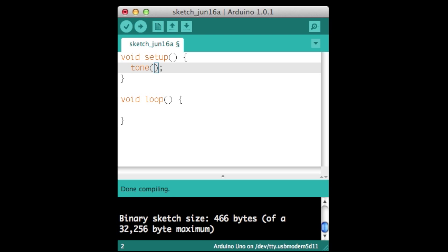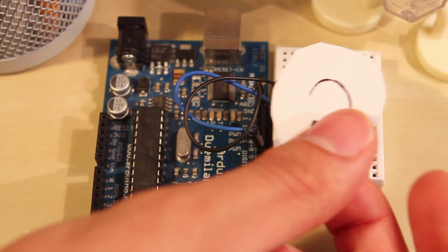Tone is very simple to use. You pick the pin, the frequency of the note, and how long to play that note. Very convenient. But how does it work?